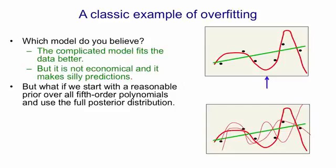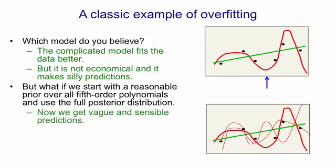So you'll see some of those thin curves miss a few of the data points by quite a lot but nevertheless they're quite close to most of the data points. Now we get much vaguer but much more sensible predictions. So where the blue arrow is you'll see the different models predict very different things and on average they make a prediction quite close to the prediction made by the green line.